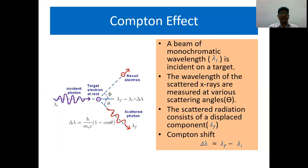The shift del lambda is equal to lambda final minus lambda initial, which is equal to h divided by m0 c into 1 minus cos theta, where h is the Planck's constant, m0 is the rest mass, c is the velocity of light, and theta is the scattering angle.